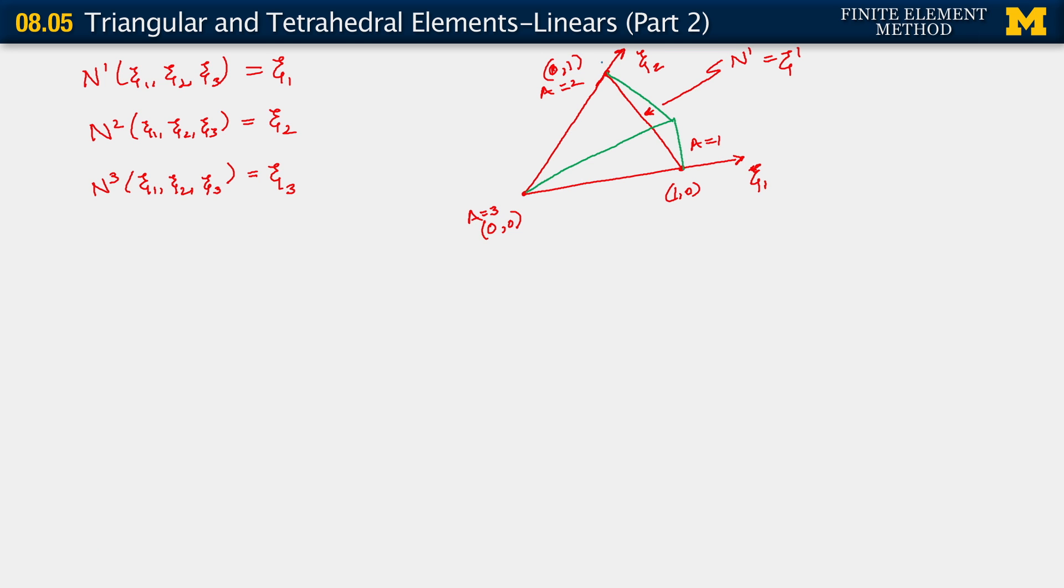So c2 is 1 there, slopes down linearly to 0 at the other two nodes. And likewise, c3 or N3 is 1 at that node, goes down to 0 linearly.